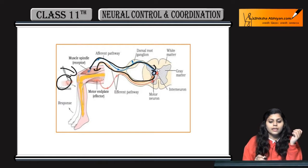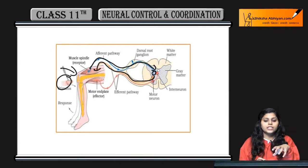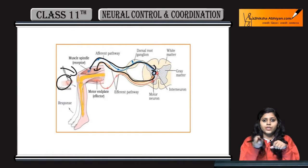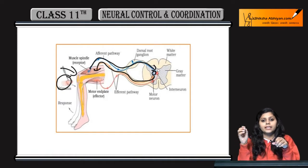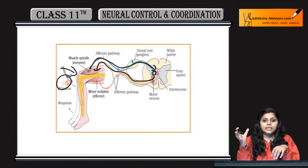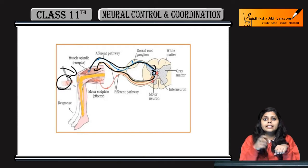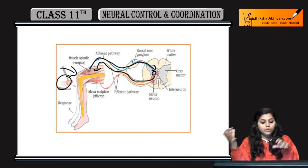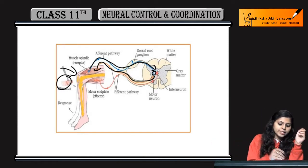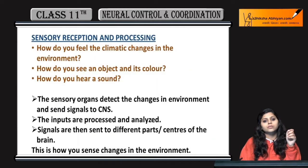When you get a stimulus — for example, if you get a knee stimulus — the efferent neurons will take the signals. Then motor neurons will give a stimulus and produce a reaction. The knee will move to the side. This is reflex action.